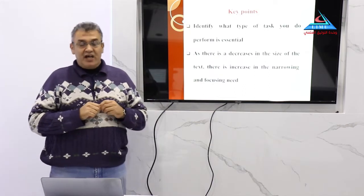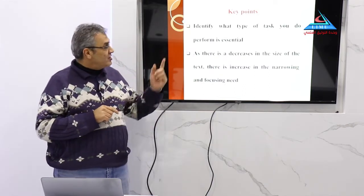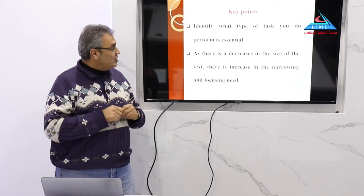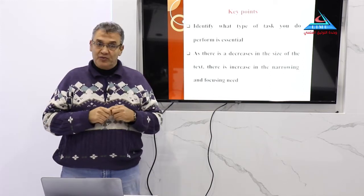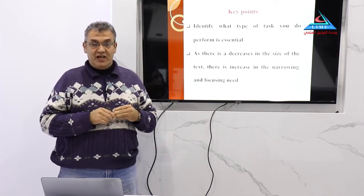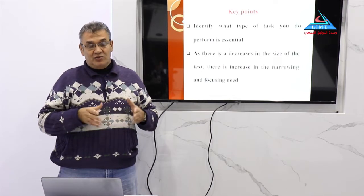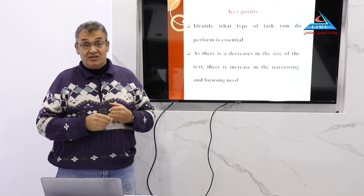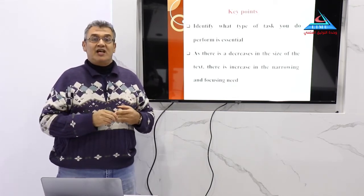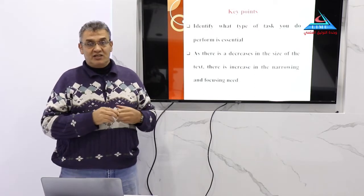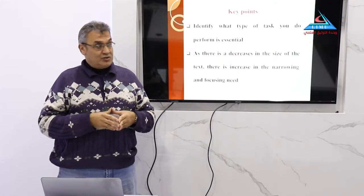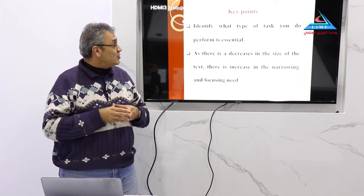Starting with some key points regarding the research process in general and academic writing, it is important to identify what type of task you are performing. We should identify by ourselves first — are we conducting a case study writing task, writing a thesis, writing a journal article, or writing a lab report? Because all of these are academic written tasks, so we should identify what sort of task we are performing.